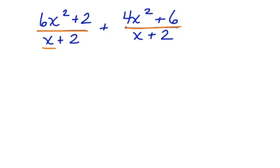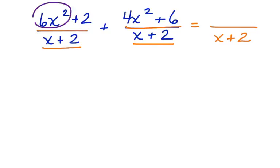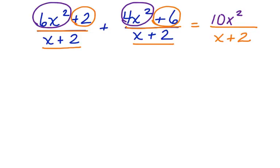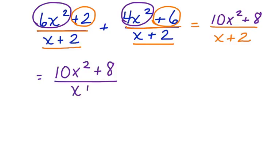If you look at this example, x plus 2 is common in both. That's our common denominator, and we're going to bring that over into our solution. Now we can look at the like terms in the numerators. 6x squared and 4x squared add together to give us 10x squared, and then we have positive 2 and a positive 6, which gives us a positive 8. So our final answer is 10x squared plus 8 over x plus 2.